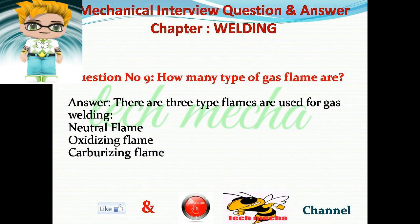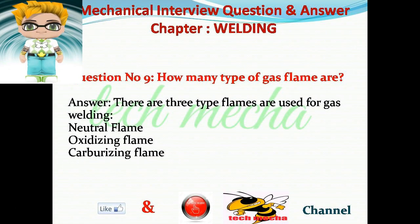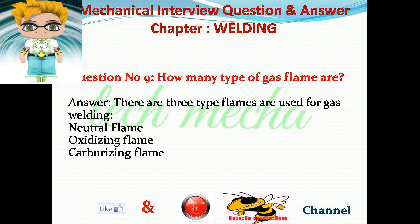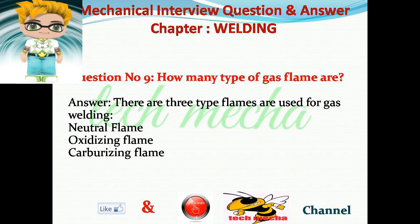Question number nine: How many types of gas flame are there? Answer: There are three types of flames used for gas welding — one, neutral flame; two, oxidizing flame; three, carburizing flame.